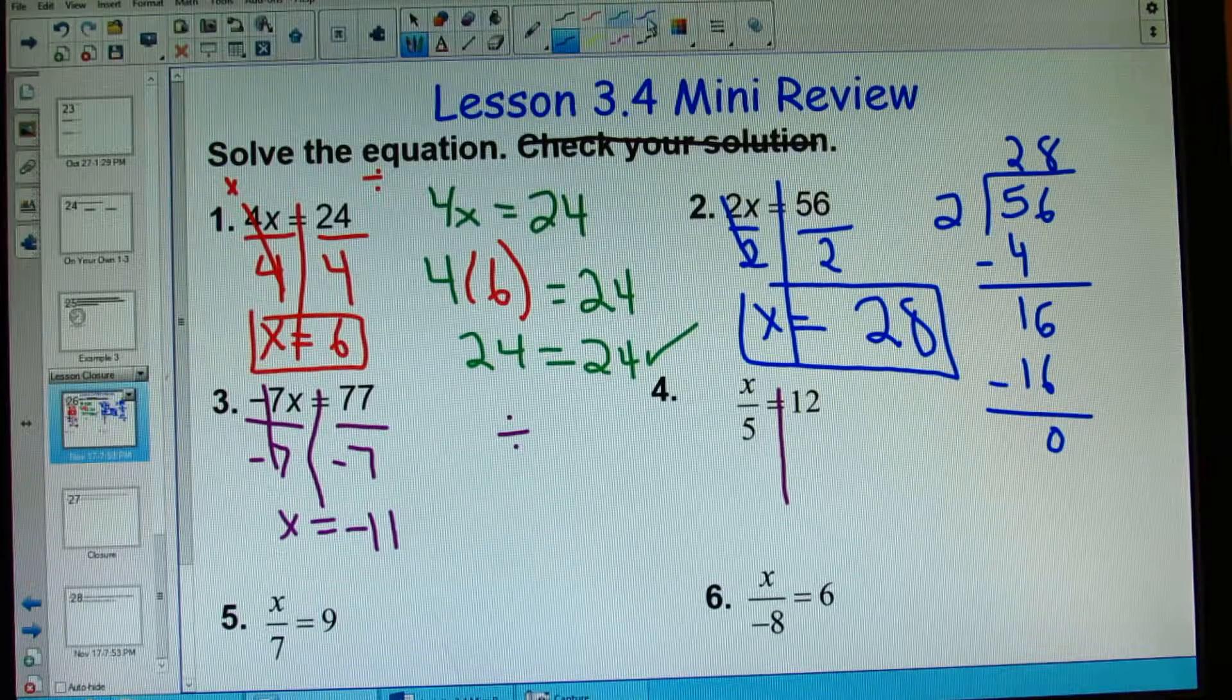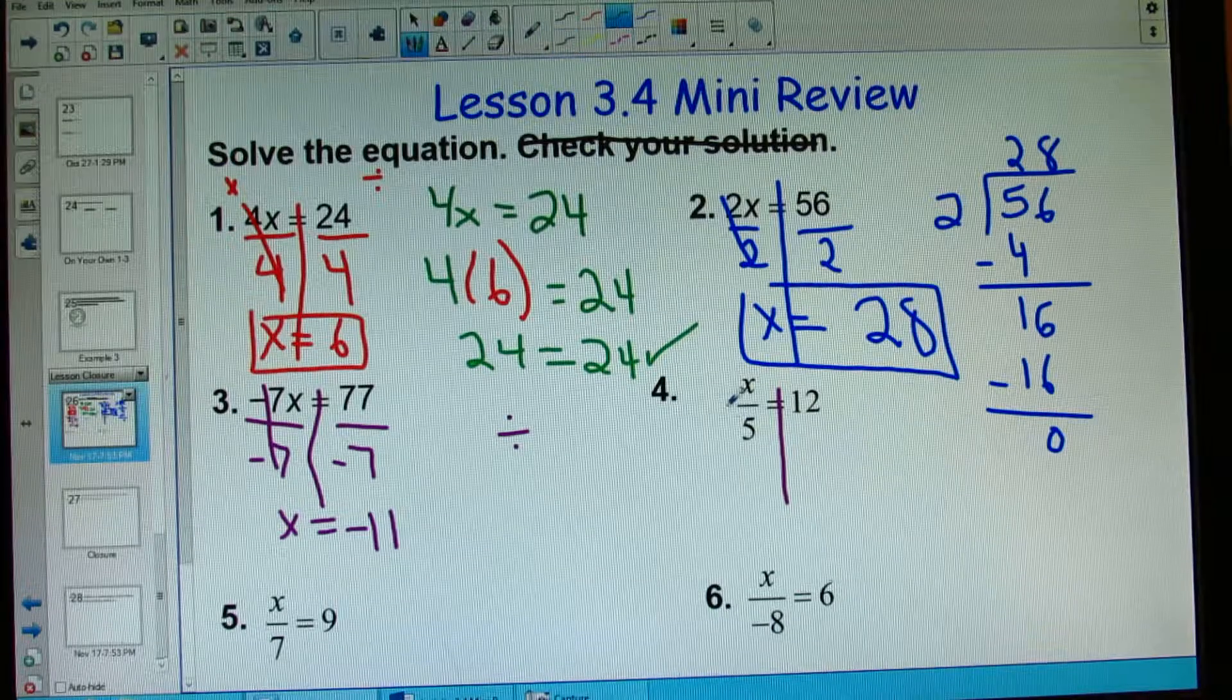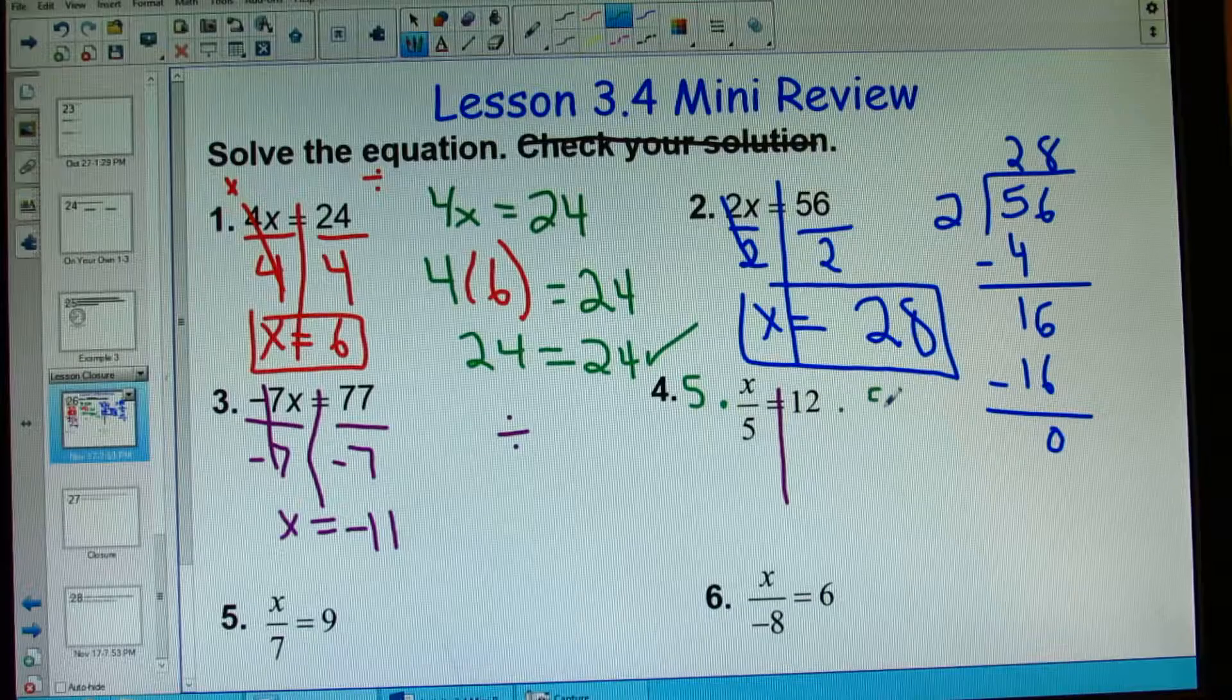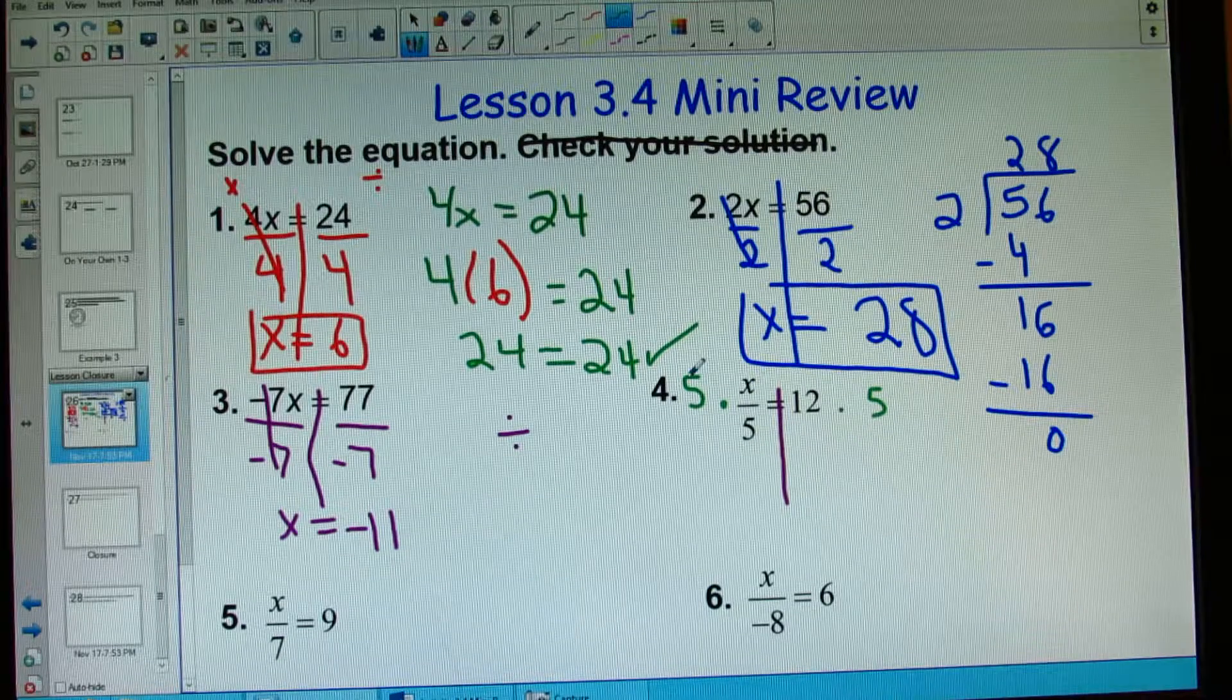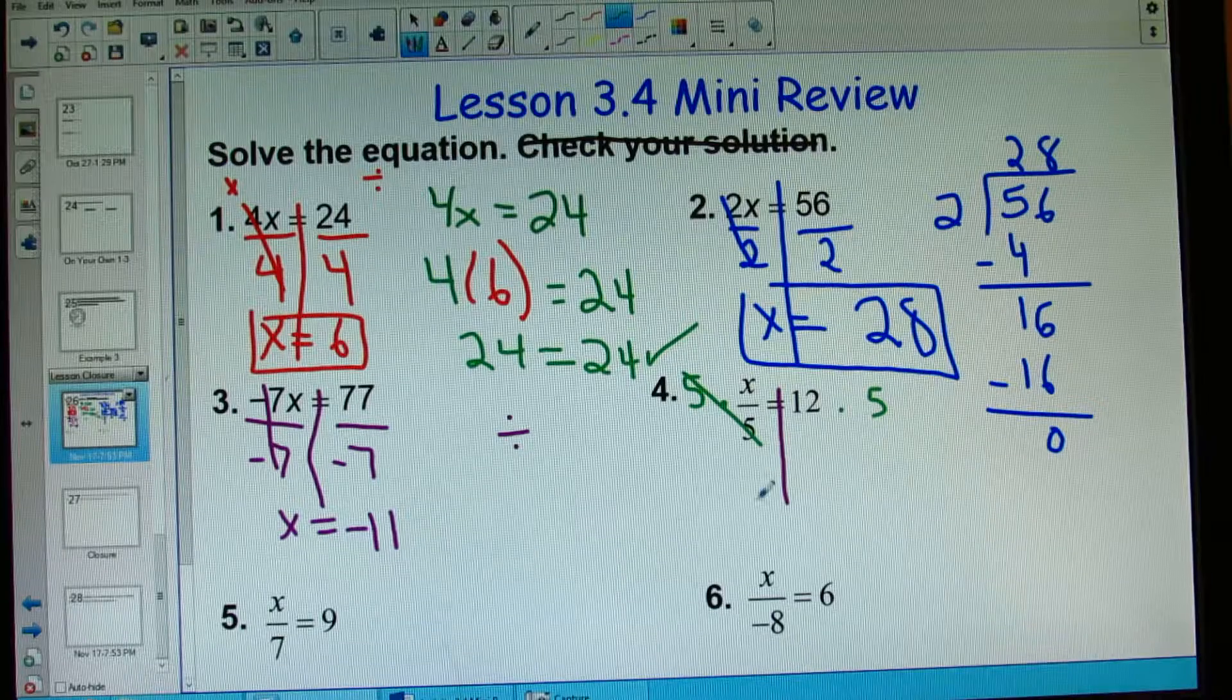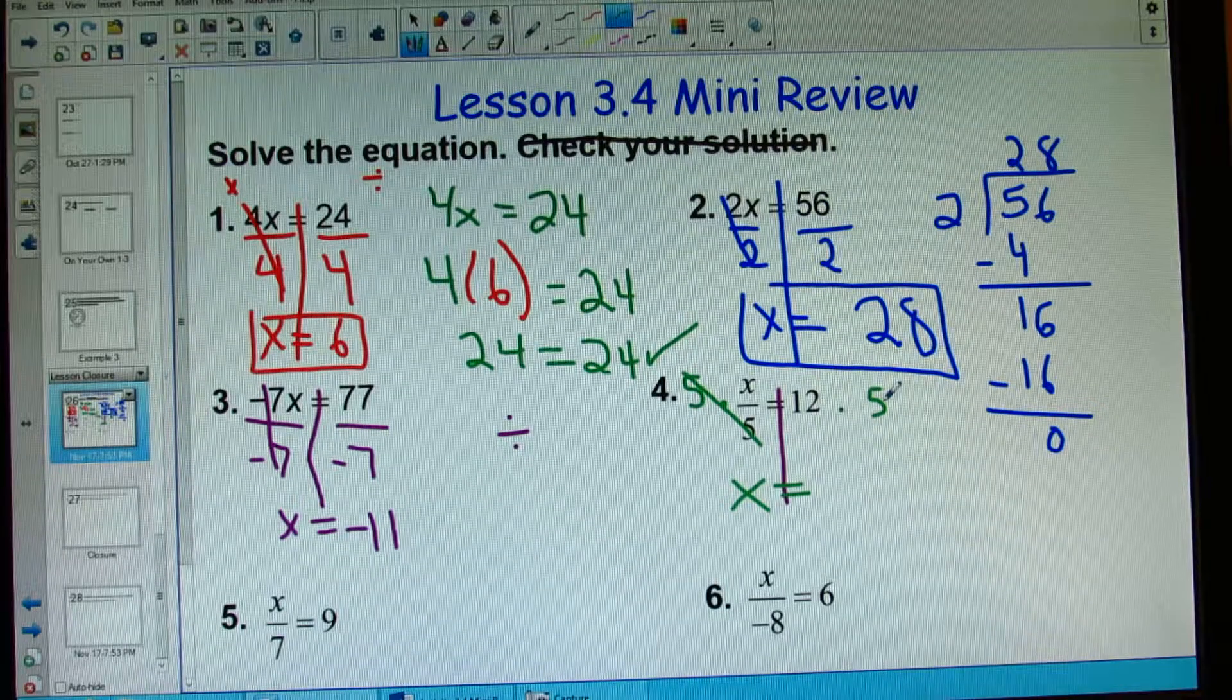In order to get rid of dividing, I'm going to need to multiply. So I'm going to multiply both sides of my equation by 5 in order to get rid of the 5 by my variable. 5 times by 5 and dividing by 5 will cross out. And I'm left with x equals 12 times 5.